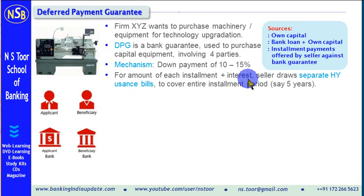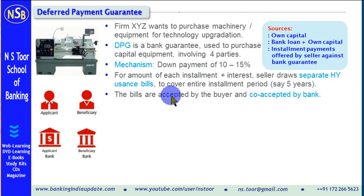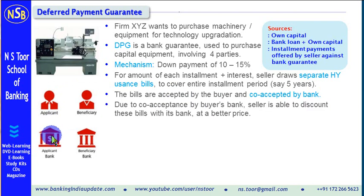The seller will draw bills of exchange, and these bills of exchange will cover different installments plus interest. These bills are accepted by the buyer and are co-accepted by the buyer's bank.